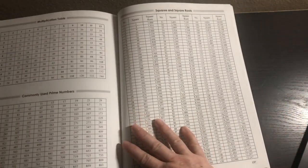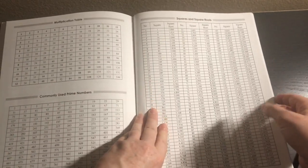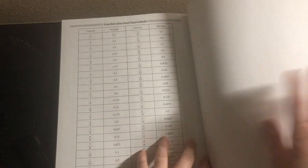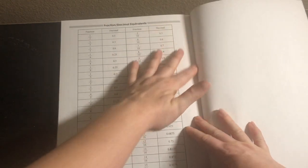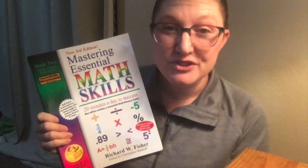This is the part I really like - we have all these helpful math papers including important symbols, a multiplication table, commonly used prime numbers, squares and square roots, and fraction/decimal equivalents. Even after you're done with this book, this is another thing I would like to tear out and keep because those are very helpful.